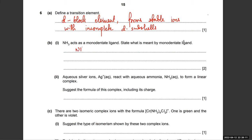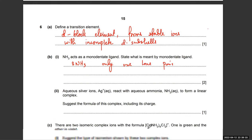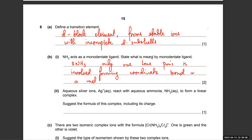What is meant by a monodentate ligand? A monodentate ligand has only one lone pair involved in forming a coordinate bond in a metal complex. Water, NH3, Cl⁻, etc. are all monodentate ligands.